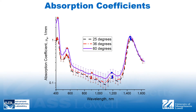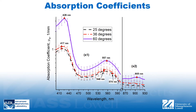The average absorption coefficients in the spectral range between 400 and 1650 nanometers are presented here. Wavelength dependence of the absorption coefficients at 25 and 36 degrees Celsius is similar both qualitatively and quantitatively. In contrast, absorption coefficients at 60 degrees Celsius are significantly higher. Absorption from 400 to 930 nanometers is dominated by hemoglobin, and the Soret absorption band of hemoglobin exhibits a redshift from 417 nanometers at lower temperatures to 426 nanometers at 60 degrees Celsius.